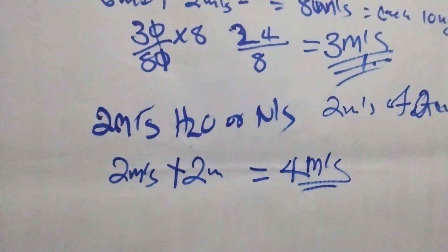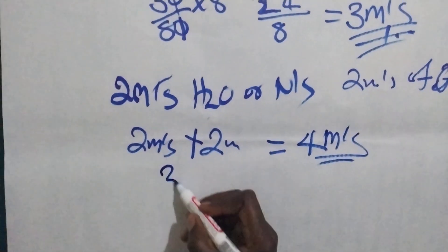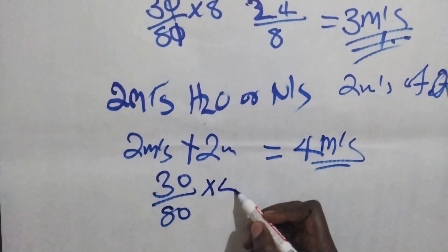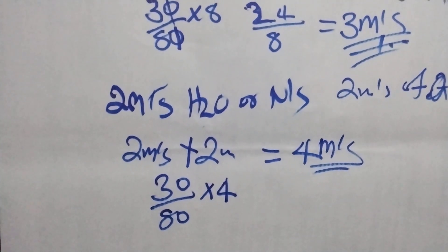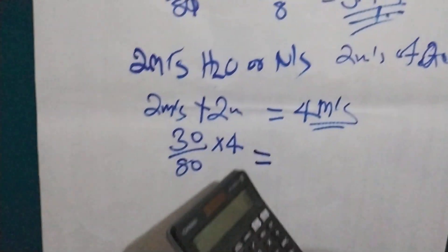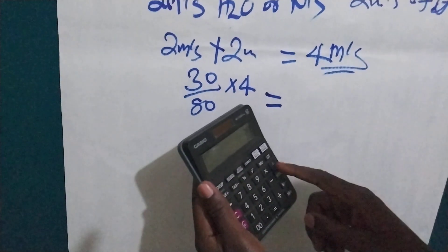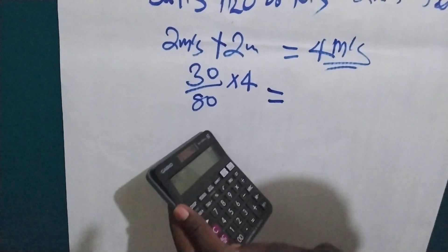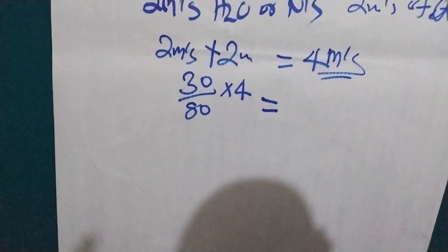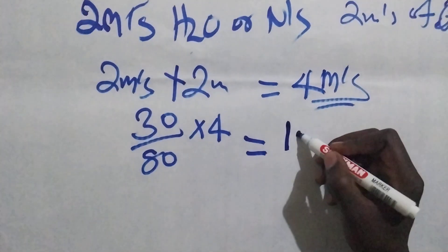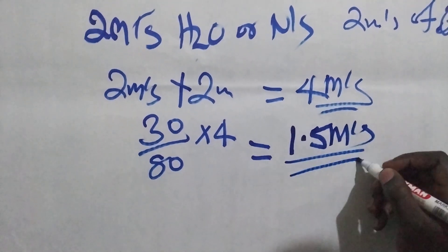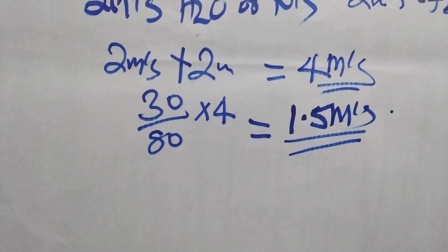Let's calculate this: 30 divided by 80 times 4. So what we are going to do, let's get the calculator. 30 divided by 80 times 4, so we are going to get 1.5mLs and we are going to give to this child.